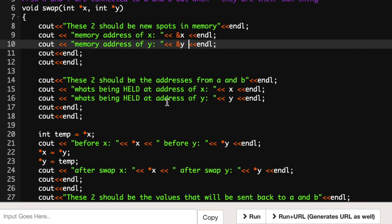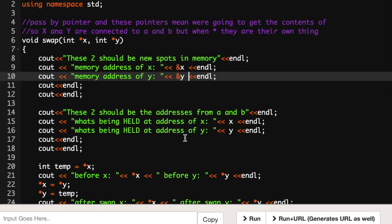Then right here is what's being held in those two spaces of memory, which are actually memory addresses of a and b. When I print this out you should see the memory address of a should be in x and the memory address of b should be in y.